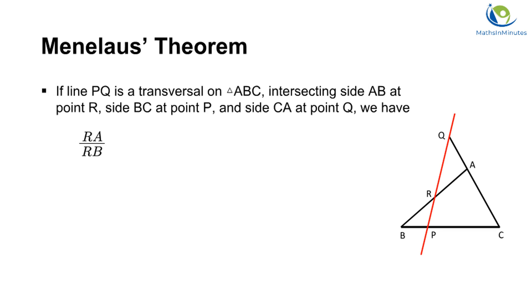Specifically, if transversal line PQ on triangle ABC creates six segments RA, RB, PB, PC, QA, and QC, we have: RA over RB times PB over PC times QC over QA is equal to 1.